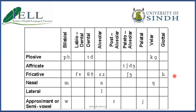That's it for manner of articulation. Now you will notice that two sounds like B and P are both bilabial and plosive — so what is the difference between them? That is what we call voicing, which we will learn in the next lecture. For now, remember this table according to place of articulation and manner of articulation. If you have any questions, you can type in the comments or note them down for the live discussion. Thank you.